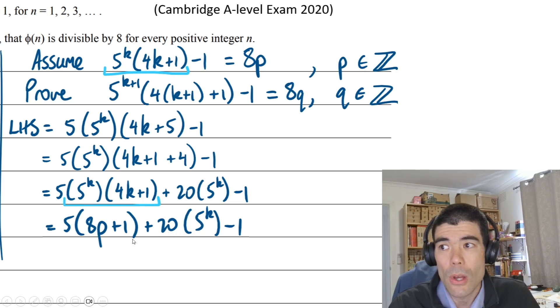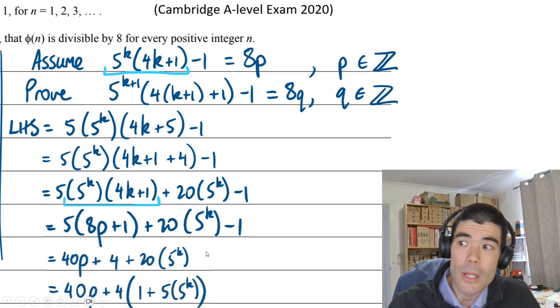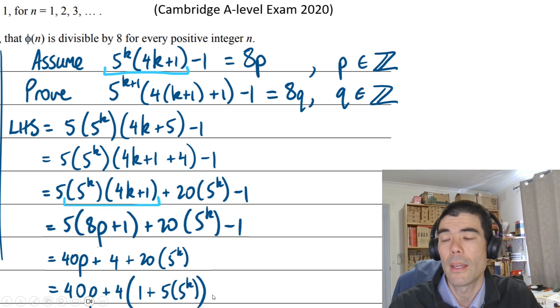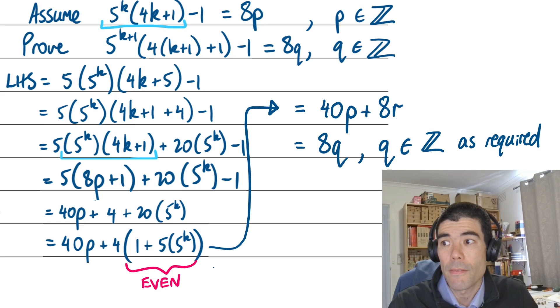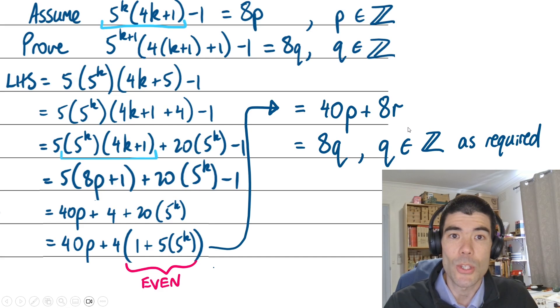Now we need to prove that this whole thing is a multiple of 8. Probably expand the brackets. 5 minus 1 is 4 and we get 4 times (1 + 5 times 5^k). Now 40p is obviously a multiple of 8, but why is 4 times that second bracket also a multiple of 8? If we look at that second bracket, we can work out it has to be even because 5 times 5^k is going to be odd. We add 1, that's going to be even. 4 times an even number is going to be a multiple of 8. Therefore, this whole thing is a multiple of 8 as required.